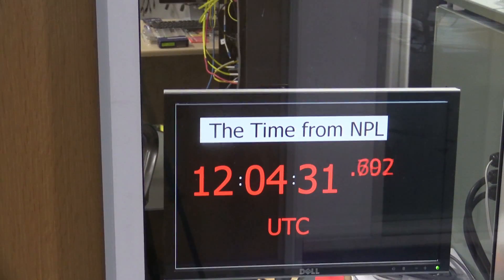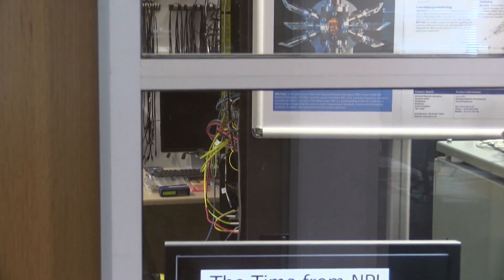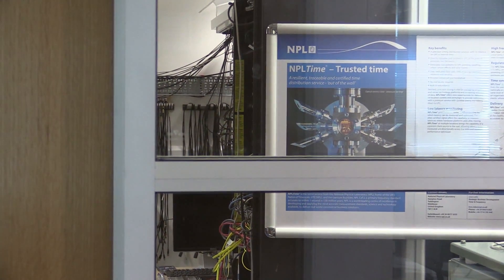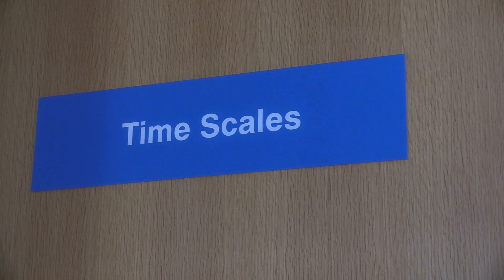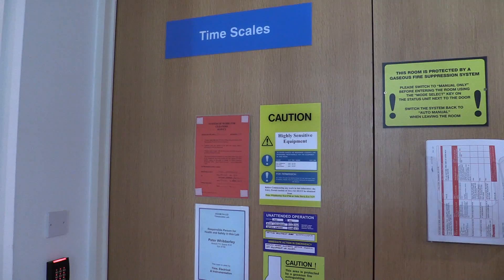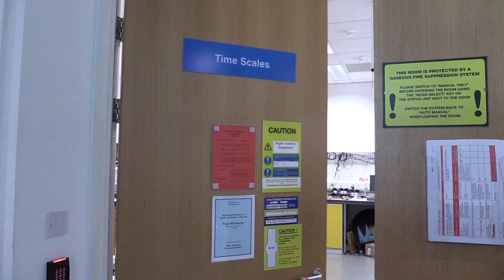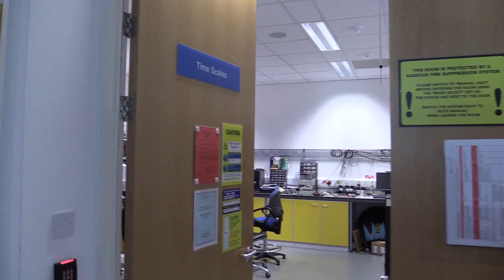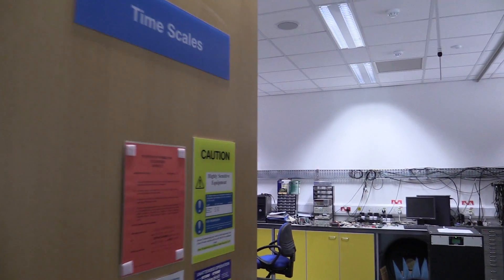Here is where we construct our version of International Atomic Time, UTC, and the way we do that is by reference to an ensemble of atomic clocks and hydrogen masers and cesium commercial clocks.